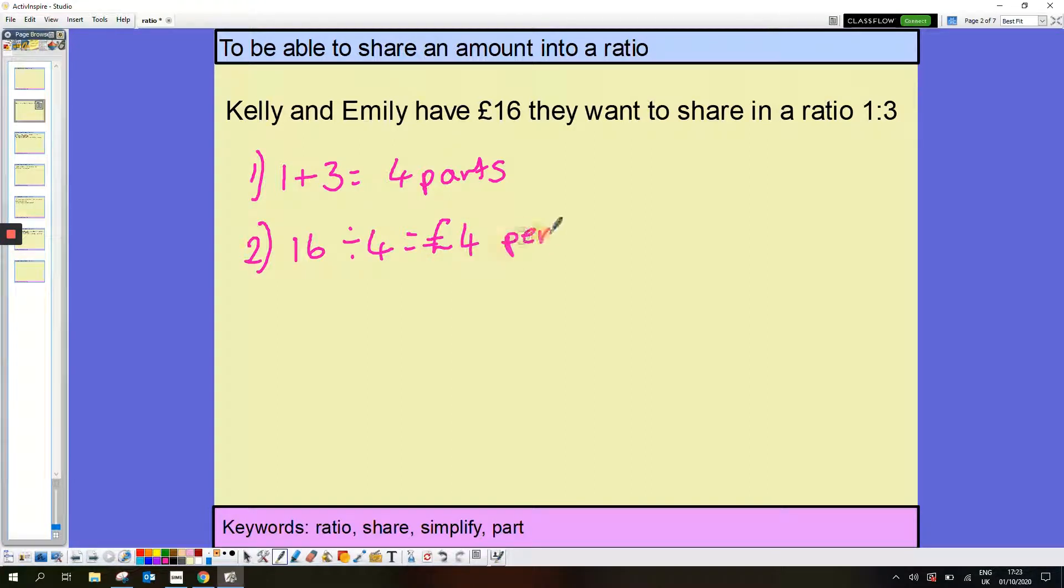And the final step is to work out Kelly and Emily's totals. Kelly gets 1 part, so she gets 1 lot of 4, which leaves her with £4. And Emily gets 3 parts, so 3 lots of 4, which is £12.